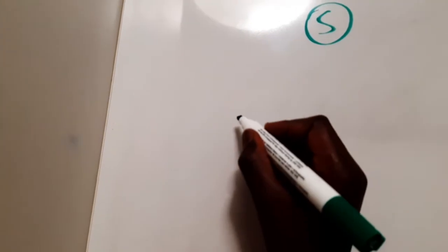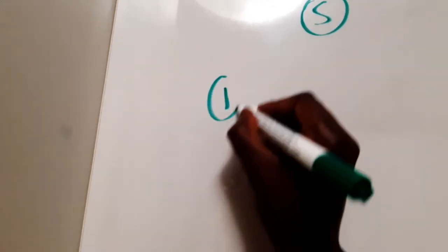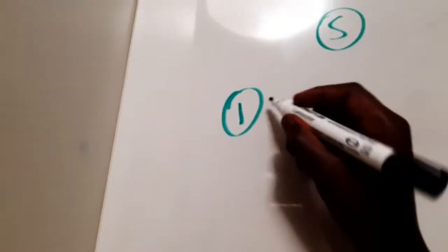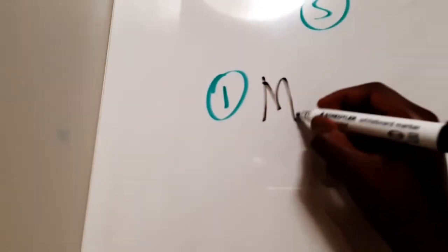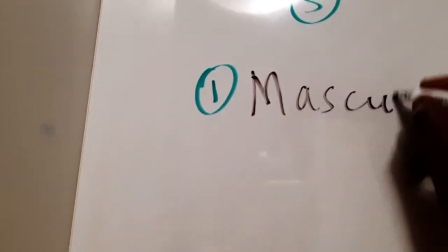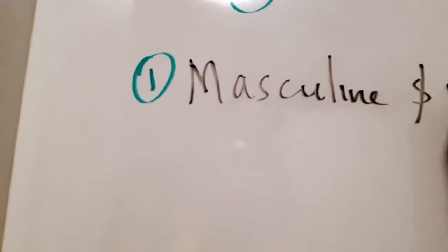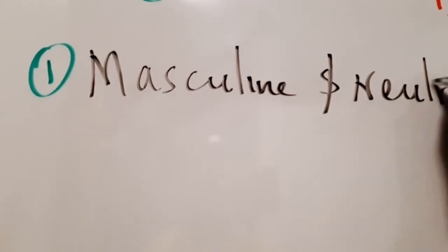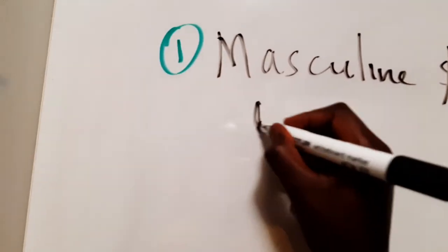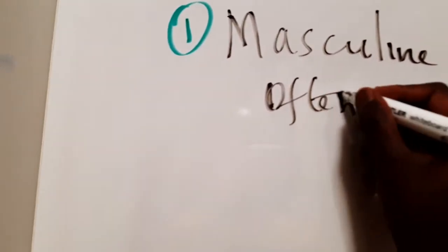In English we normally add -s, but in German it's a bit different. One is the masculine, the masculine and neutral nouns often take an -e.